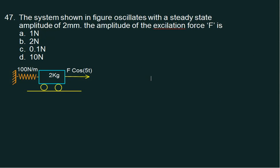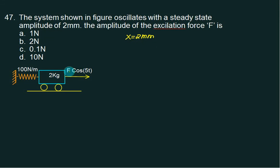In this question, the system shown in the figure oscillates with a steady-state amplitude of 2 m. So capital X equals 2 m — that is given to us. The amplitude of the excitation force F — we want to find out this value of F. Comparing, this value is basically F equals F0, so we want to find the value of F0.